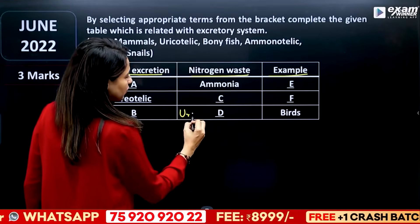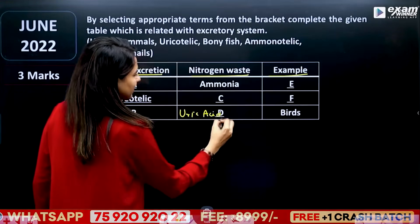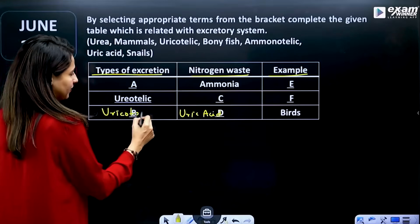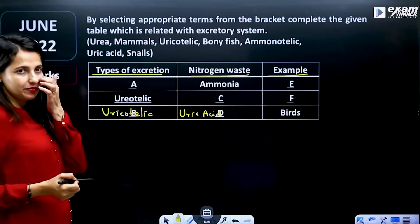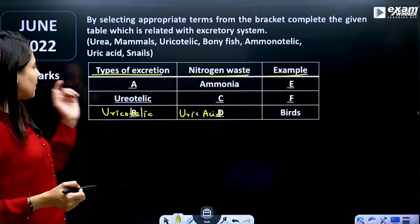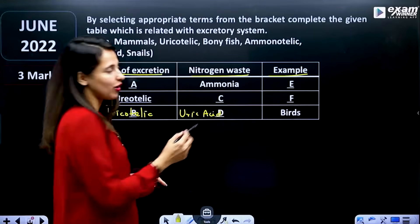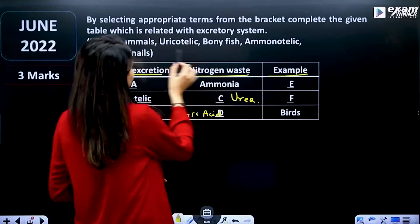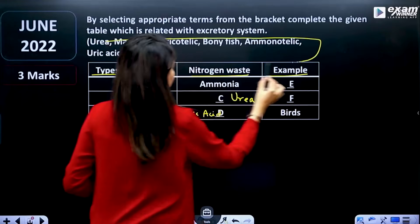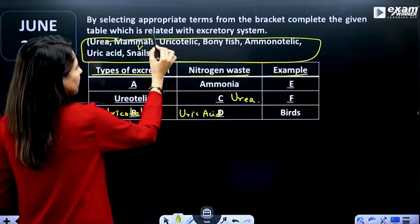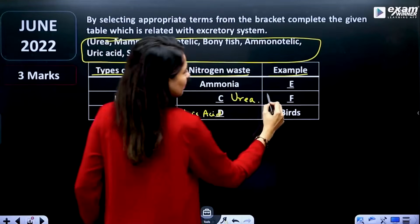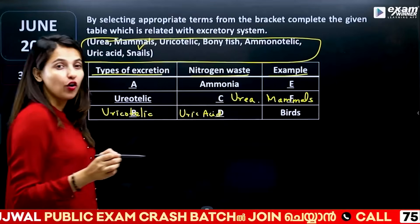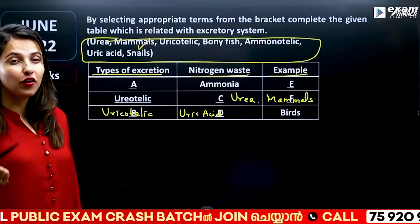Nitrogenous waste includes uric acid. What type of excretion is uric acid? If we know uric acid, we can identify it as uricotelic. There are mammals and frogs that are uricotelic in this category.